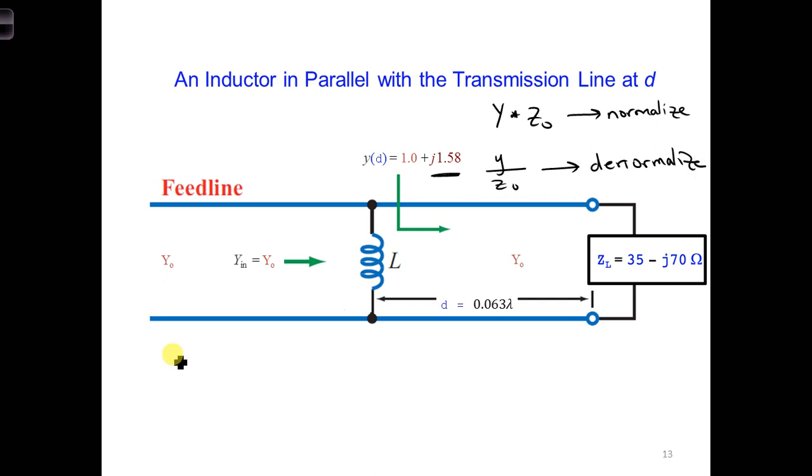So here we have Y in. We want it equal to Y naught. Right now it's equal to Y at position d, this distance. And we have 1 plus J1.58. We need to divide by Z naught, which is 70. And we get 1 over 70, I'm not worried about that part right now, so it's J0.023. So that means the true admittance we need to cancel is this J0.023.